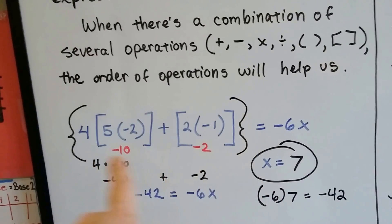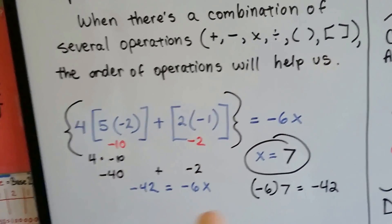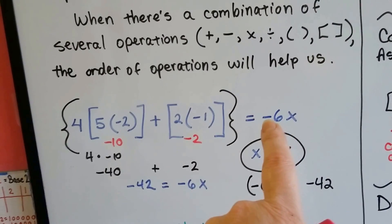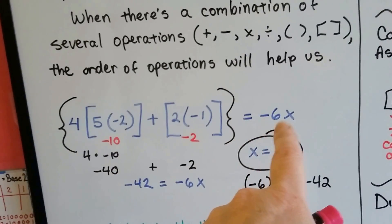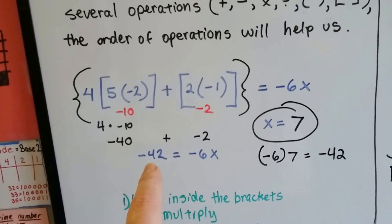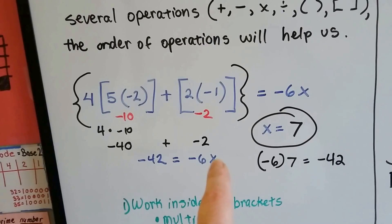Well, so that means all of this inside of here, inside these braces, was negative 42. So now, all of the things inside the braces is equal to negative 6x and we've got to solve for x. Negative 42 is equal to negative 6 times something.